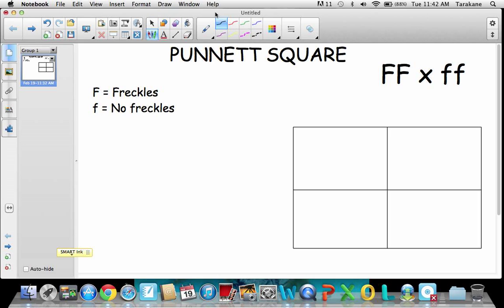So the very first thing you want to do is take your genotypes and put them on the Punnett square. We're going to put a dominant F here and a dominant F here, coming from over here. Then I'm going to take the two recessives and put them on the side.